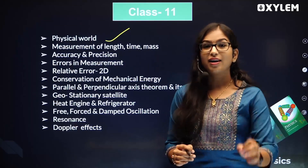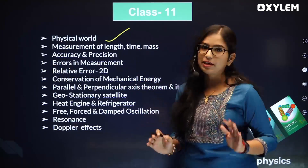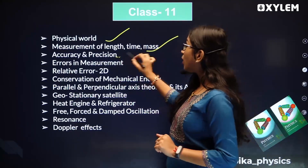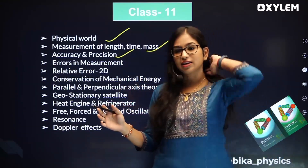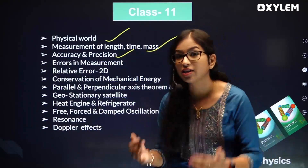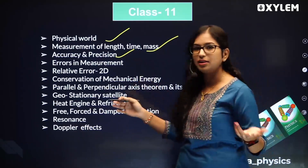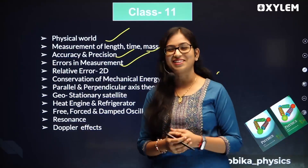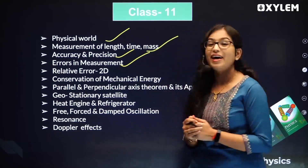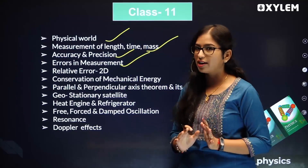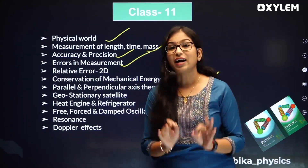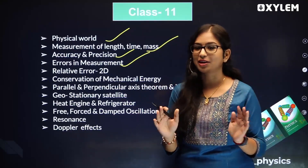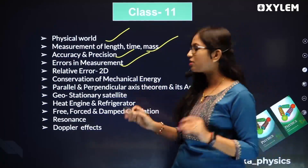The first unit is measurements of length, mass and time - this is deleted. Accuracy and precision - deleted. Errors in measurement is a very important topic that everyone likes, but it is also deleted. In the remaining part of this unit, dimensional analysis is still there, so at least make that perfect.